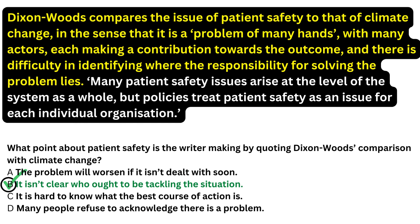What point about patient safety is the writer making by quoting Dixon Woods' comparison with climate change? Now if you read the highlighted section, Dixon Woods compares the issue of patient safety to that of climate change, in the sense that it is a problem of many hands, with many actors, each making a contribution towards the outcome, and there is difficulty in identifying where the responsibility for solving the problem lies. From this, you should have understood that the writer has the opinion that it is unclear who should be responsible to solve the problem, like climate change. Therefore, option B is the correct answer.